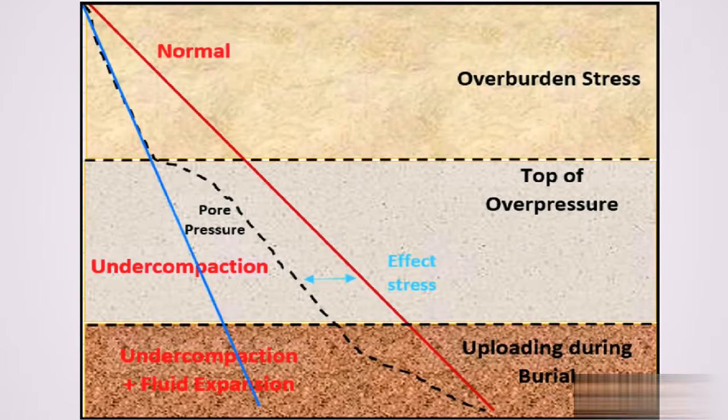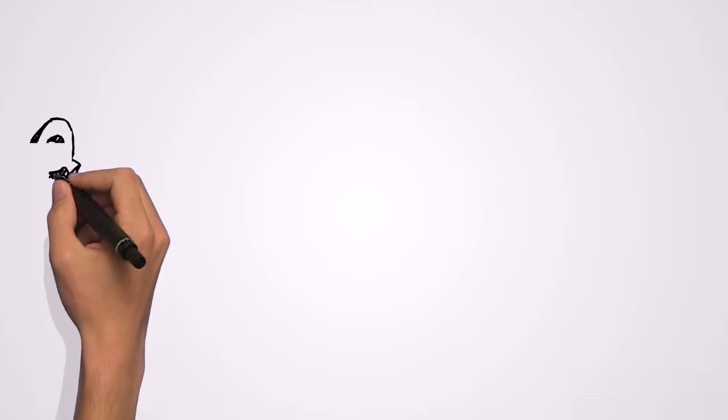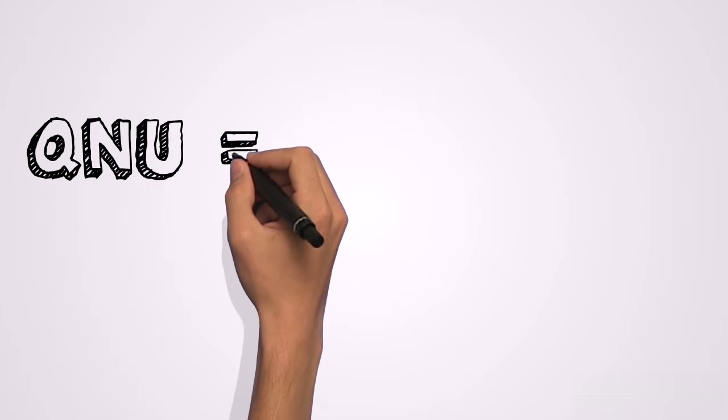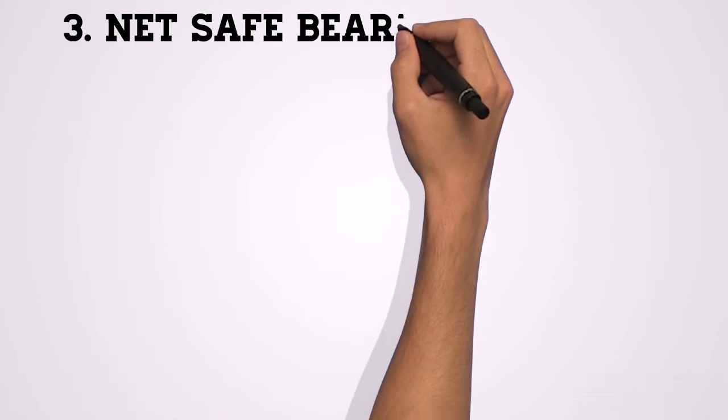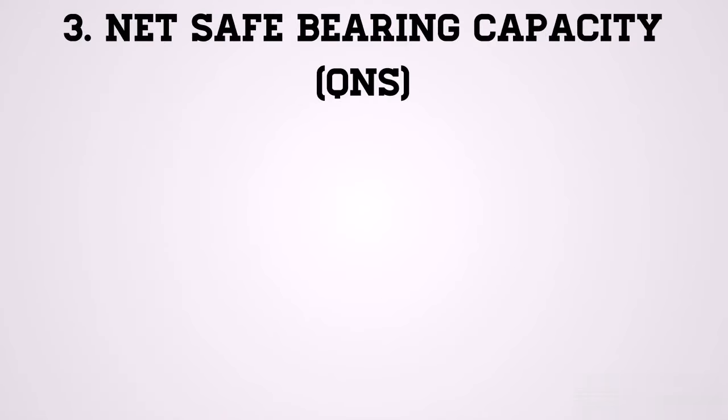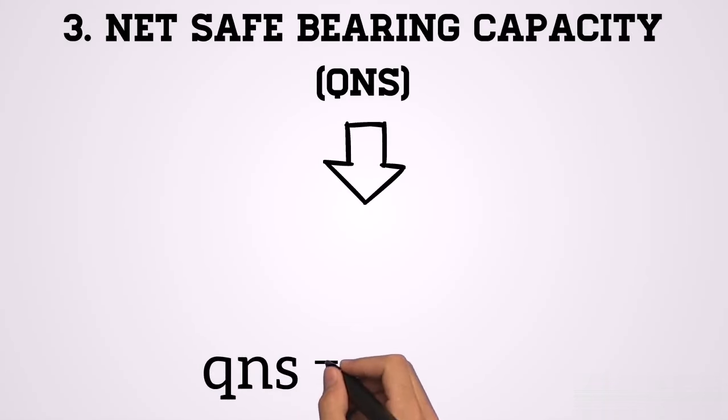The net ultimate bearing capacity does not take into account the overburden pressure and can be calculated as QU minus gamma multiplied by the depth of the foundation DF. The third is the net safe bearing capacity, designated as QNS, which takes into account only shear failure and can be calculated as the net ultimate bearing capacity divided by a factor of safety.